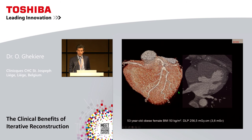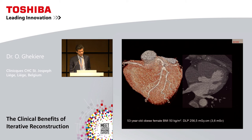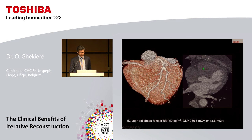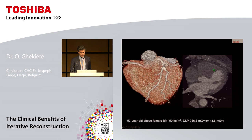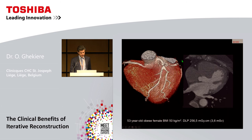These images are from a 53-year-old very obese female — a very challenging scan — and you can see there is significant noise on the axial and 3D reconstructions. However, using the AIDR 3D iterative reconstruction, there is less image noise and improved image quality.